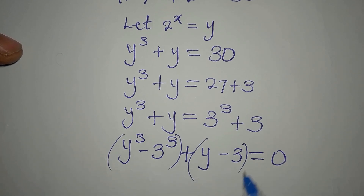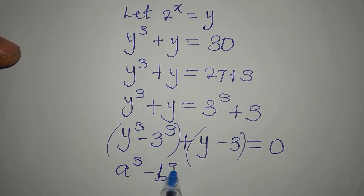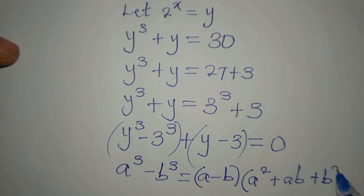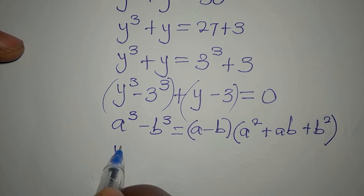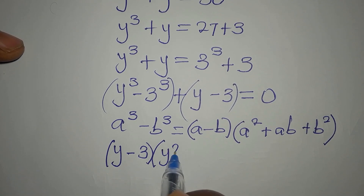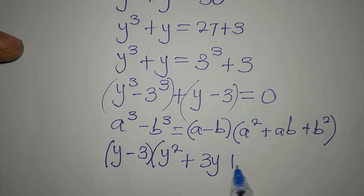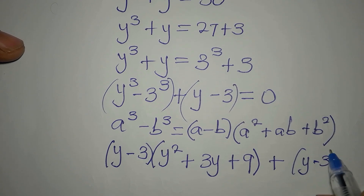Here we apply the difference of two cubes. Recall that a³ minus b³ equals (a minus b)(a² plus ab plus b²). So with a = y and b = 3, we get (y minus 3)(y² plus 3y plus 9), then plus (y minus 3) equals 0.